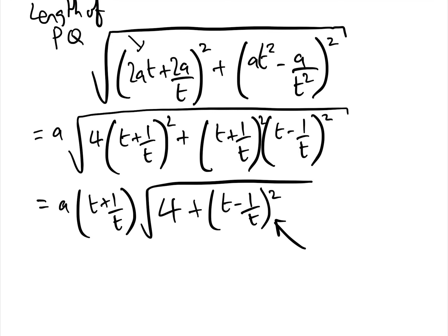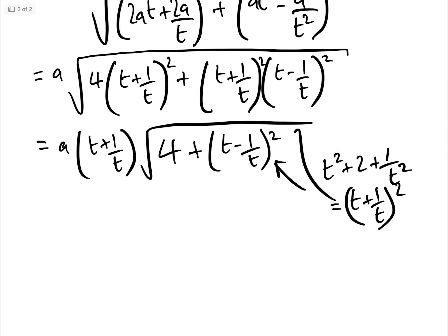And we're nearly there now, which if we expand that bit there, that is t squared add 2 add 1 over t squared, which equals t add 1 over t squared,